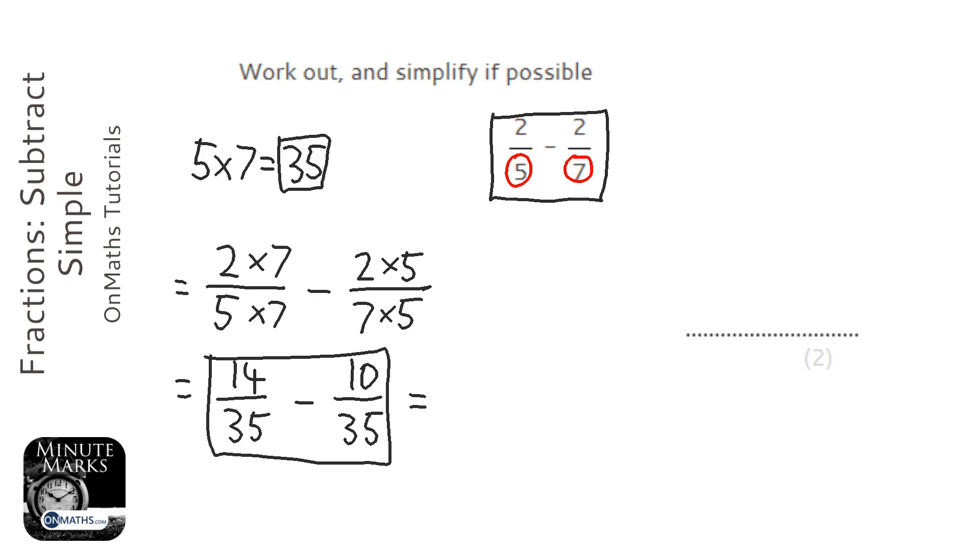And then when their bottoms are the same, or denominators are the same, we just take away the top. So 14 take away 10 is 4 over 35.